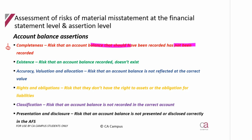Existence: they say it does exist; we say there's a risk it doesn't exist and therefore it is overstated — it shouldn't have been recorded. Accuracy, valuation and allocation: there's a risk it's not reflected at the correct value, meaning the balance could be overstated or understated. Rights and obligations: they say they have the rights to the asset or the obligation to the liability; we say there's a risk they don't have that right or obligation — so over or understated. Classification: the account balance is not recorded in the correct account, and same for presentation and disclosure — either over or understated.